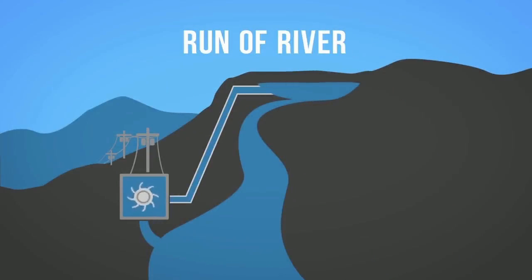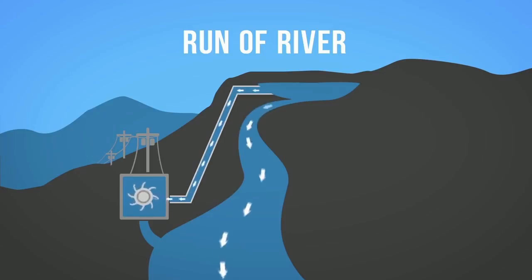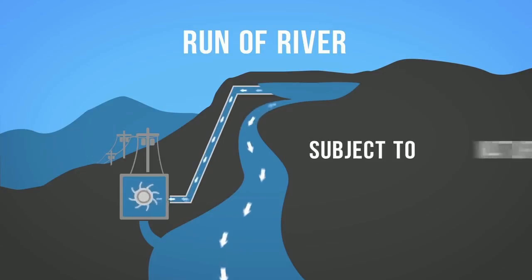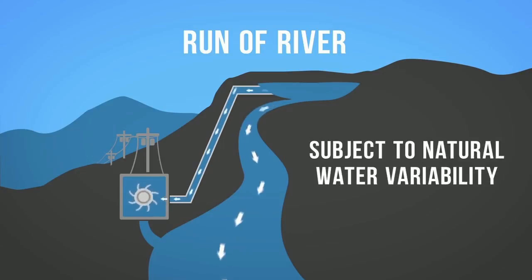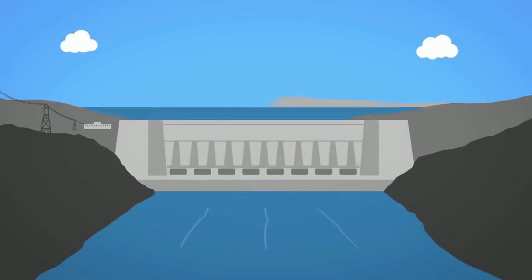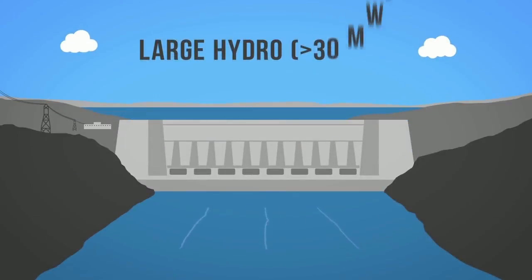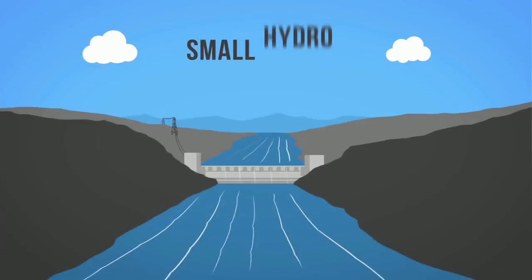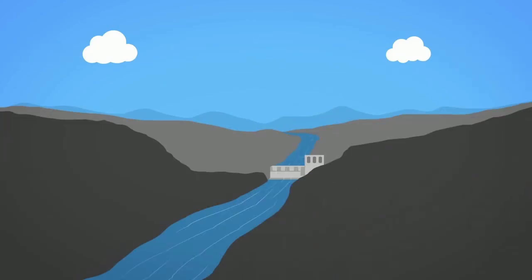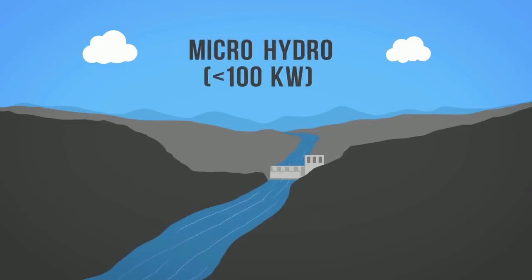The second form of hydroelectricity production is run of river hydro, which still uses turbines and generators but relies on natural water flow rates of rivers, diverting just a portion of the water through turbines. Because run of river hydro is subject to natural water variability, it is more intermittent than dammed hydro. There are various sizes of hydro plants: large hydro greater than 30 megawatts, small hydro from 100 kilowatts to 30 megawatts, and micro hydro less than 100 kilowatts.